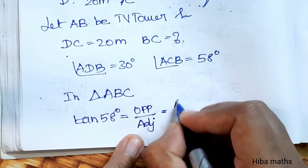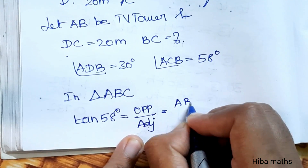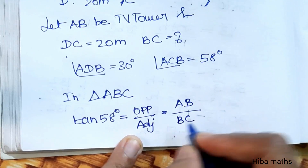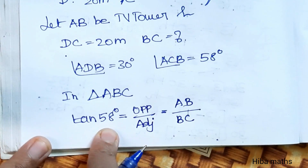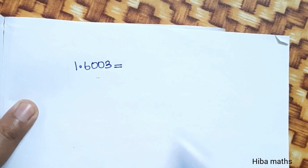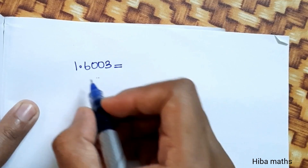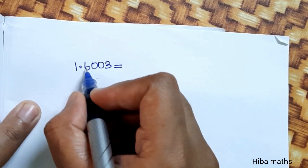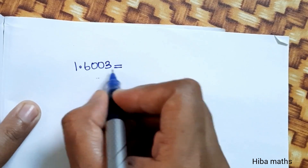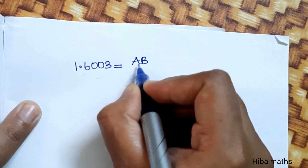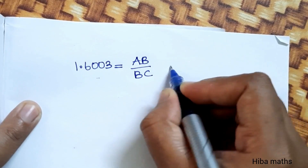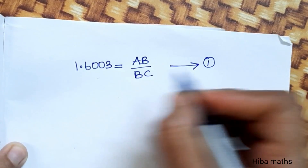Tan 58 degrees is equal to opposite side divided by adjacent side, which is AB divided by BC. Tan 58 degrees equals 1.6003. So: 1.6003 = AB / BC. This is the first equation.